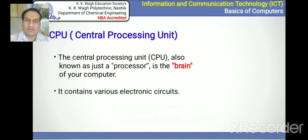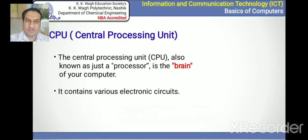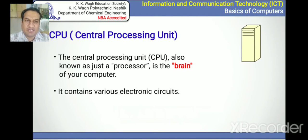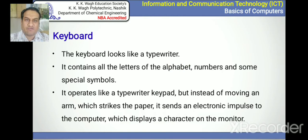The main element of the computer system is the CPU — the Central Processing Unit — which is the brain of the computer. It contains various electronic circuits to operate and process all the data, and gives output as per the requirement of the user.